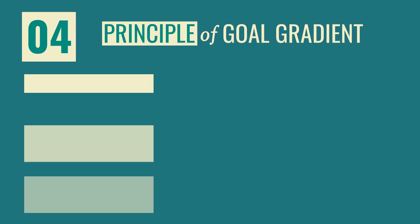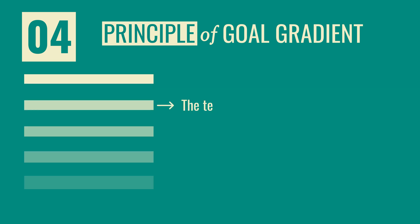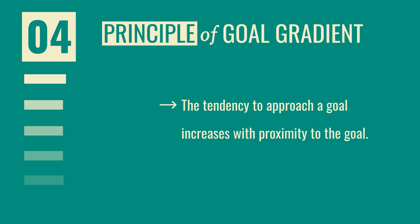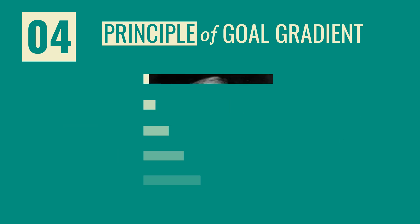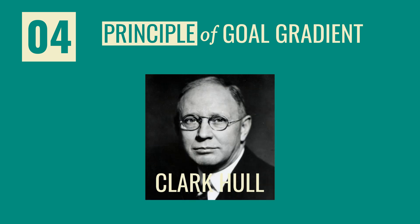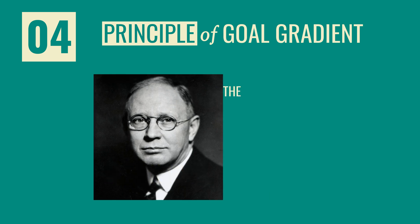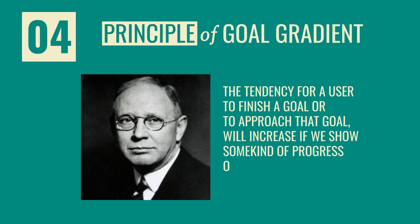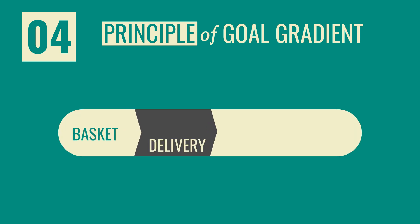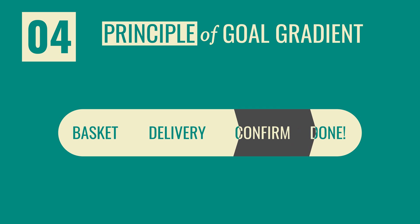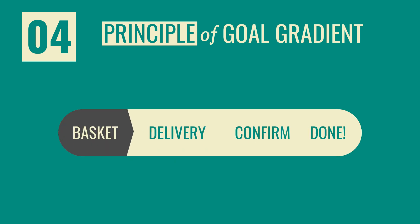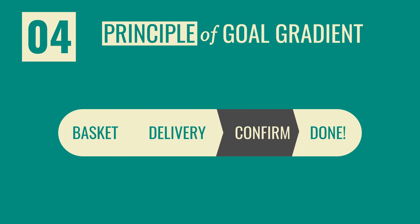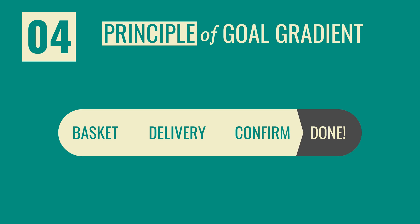Let's look at principle number four: the principle of goal gradient. This states that the tendency to approach a goal increases with proximity to that goal. It was first proposed by behaviorist Clark Hull in 1932, stating that a user's motivation to finish a goal increases if we show some kind of progress or proximity to that goal. One way to apply this in web design is to show a progress or loading state — for example, when filling out a complex multi-step form, show the user which step they are on.